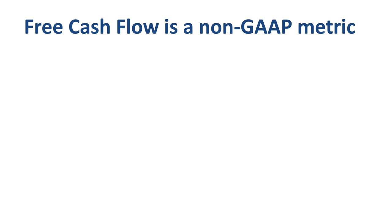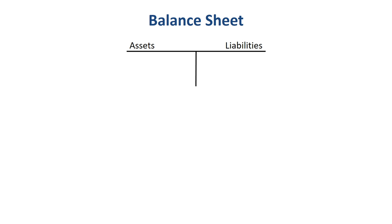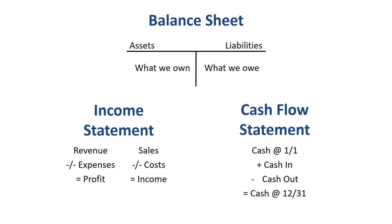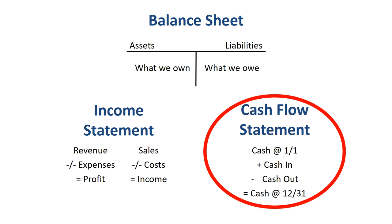Let me give you some context so you know where free cash flow fits in. There are three financial statements: the balance sheet, an overview of what we own and what we owe at a point in time; the income statement, an overview of the profit or income generated during a period; and the cash flow statement, an overview of how much cash you generate and where you spent your cash during a period. Free cash flow, as its name suggests, is a cash flow metric.